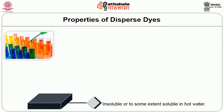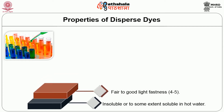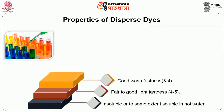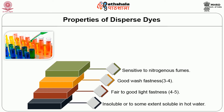Moving on to the fastness properties, disperse dyes possess fair to good light fastness properties and good wash fastness properties, i.e. 3–4 grade. Disperse dyes are normally sensitive to nitrogenous fumes which come from automobiles.